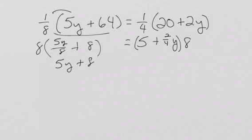Nope, not plus eight. Remember, you have to distribute. So, it's going to be five y plus 64 equals 40 plus eight times two-fourths. Well, that's going to be four y.